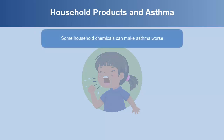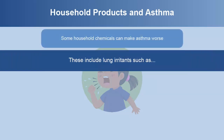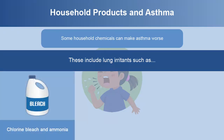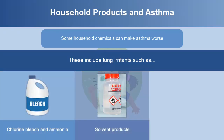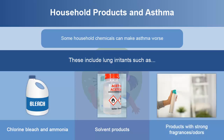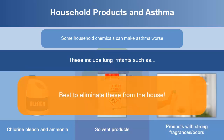Some household chemicals can make asthma worse. These include lung irritants such as chlorine bleach and ammonia, solvent products like acetone and paint thinner, and products with strong fragrances or odors. It is best to eliminate these from the house.